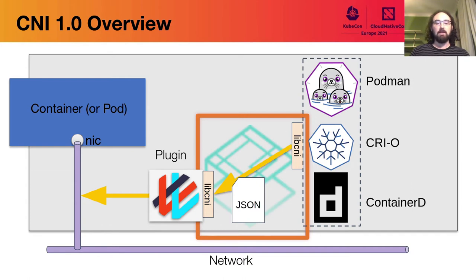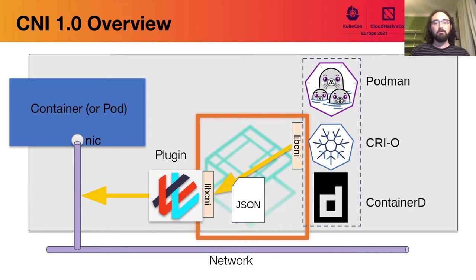libcni is maintained by the CNI project itself. The CNI project also supplies some commonly used network plugins for really common use cases, such as a generic bridge implementation. But the CNI plugins released by the CNI project are by no means an exhaustive or exclusive set of CNI plugins that people tend to use. In this diagram on the screen, CNI is everything in the orange box — the configuration and the protocol by which a runtime talks to a plugin — and libcni is the reference implementation in between.